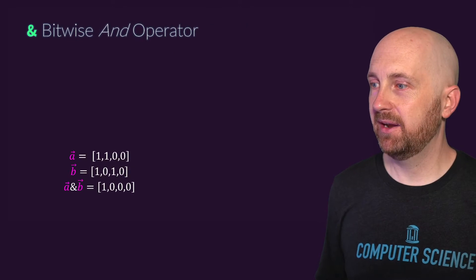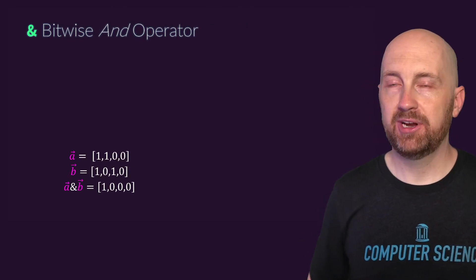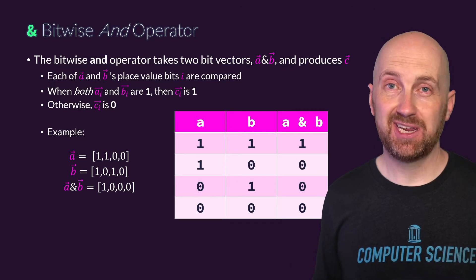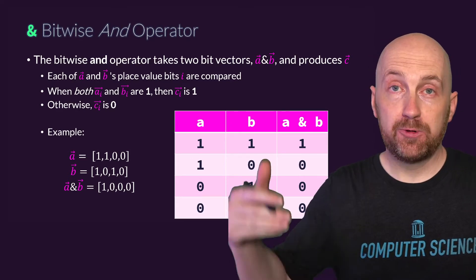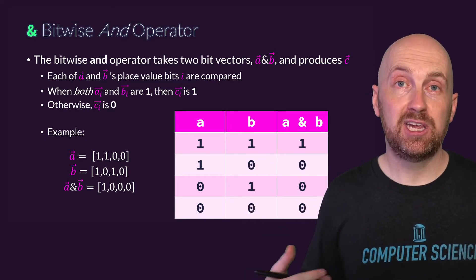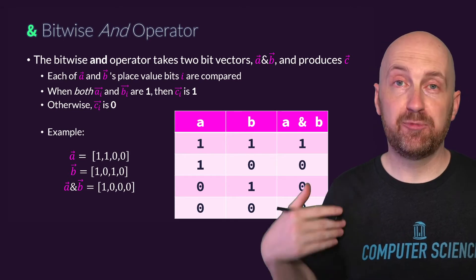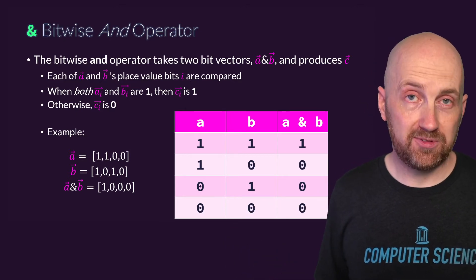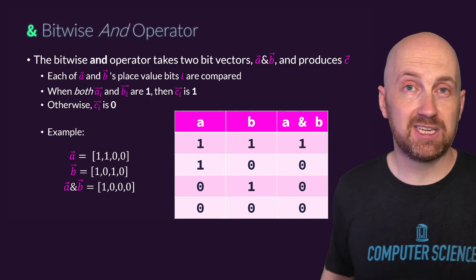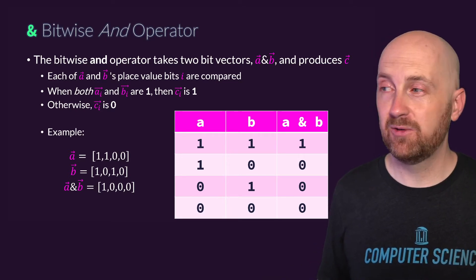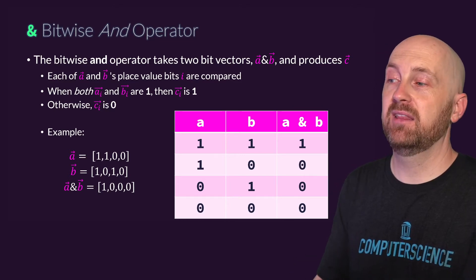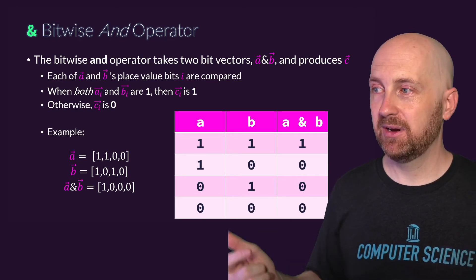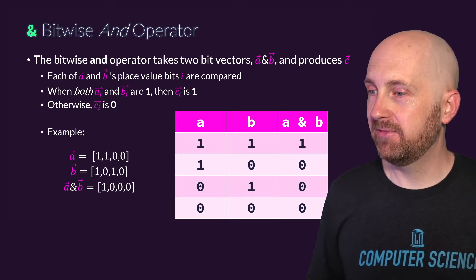Bitwise AND is a binary operator that takes two bit fields — two bit vectors A and B — and produces a third bit vector without changing the inputs. Going through bit by bit, if both bits at the same position are one, the resulting bit is one. If either or both are zero, the result is zero. This maps directly to what you know about the logical AND operator with true/false Boolean values, but here it performs this comparison across every bit in the field.